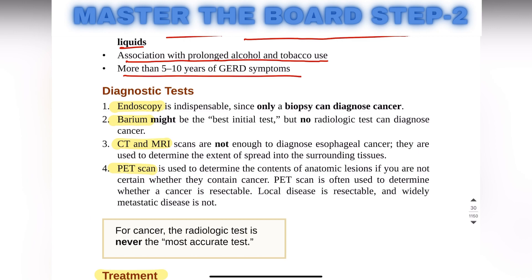For diagnosis we have several options. First of all, endoscopy, then barium studies, CT scan, MRI, and PET scan. Endoscopy is the most accurate one since only a biopsy can diagnose a cancer. Barium might be the best initial test, but as we know, no radiologic test can diagnose a cancer.